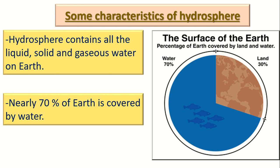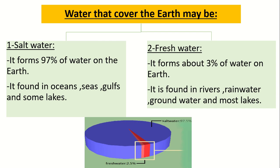How much of the Earth's surface is water? The Earth's surface contains 70% water and only 30% land. Now, of all that water, 97% is salt water and only 3% is fresh water.